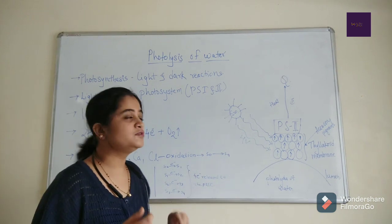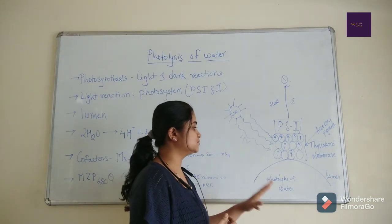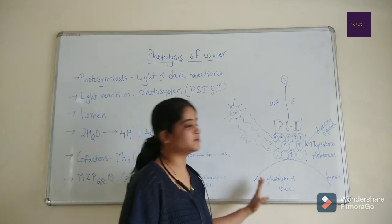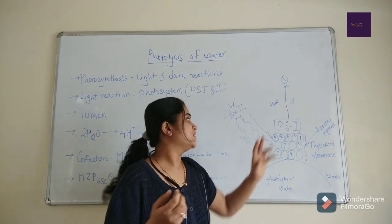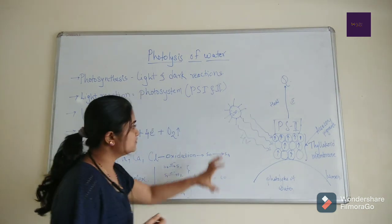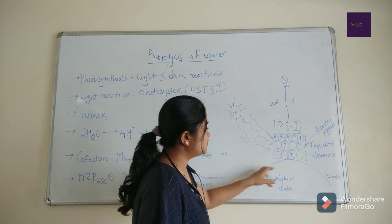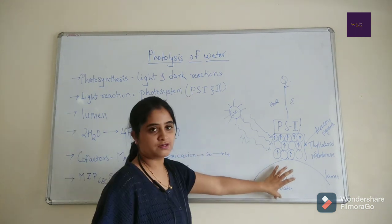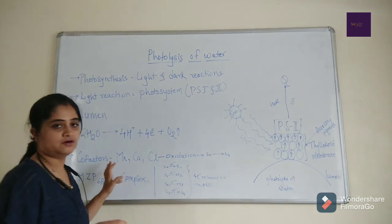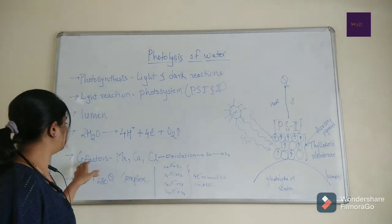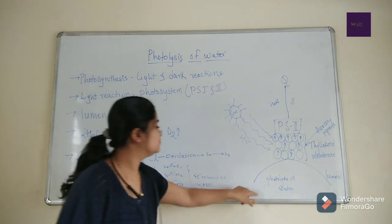Now, a question will come into mind - what is the electron source? The electron source is nothing but the photolysis of water, and from that reaction the PS2 gets the electron. When the light is absorbed by the accessory pigment, there is oxidation of water that takes place in the lumen region. This oxidation of water is due to the cofactors.